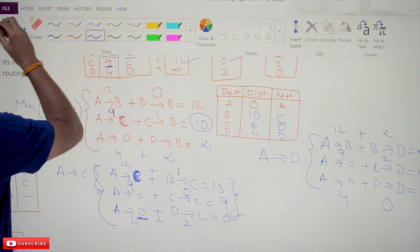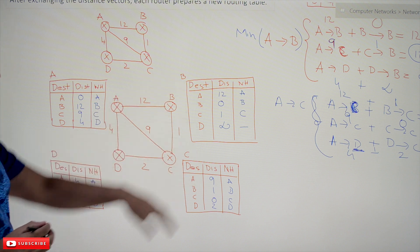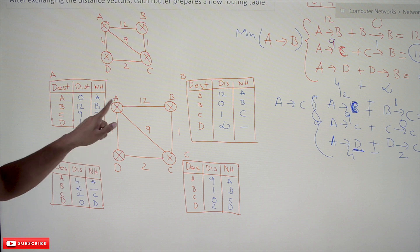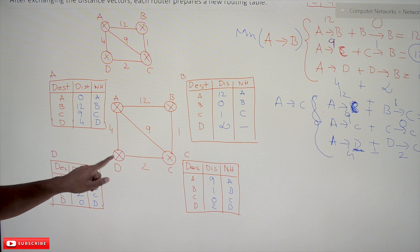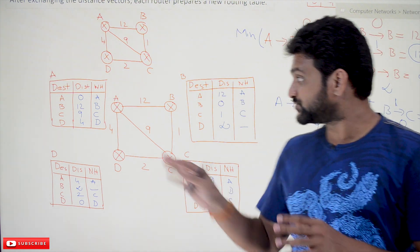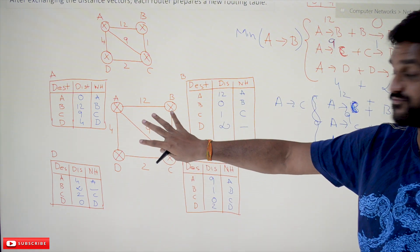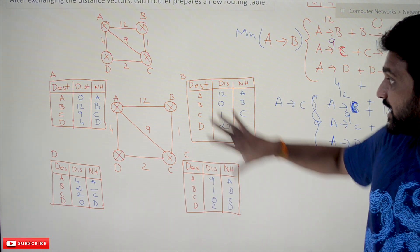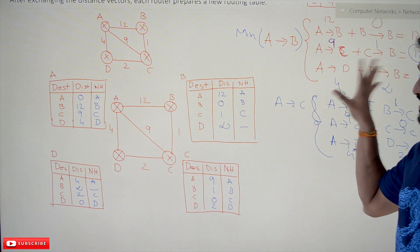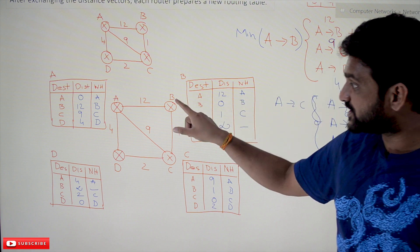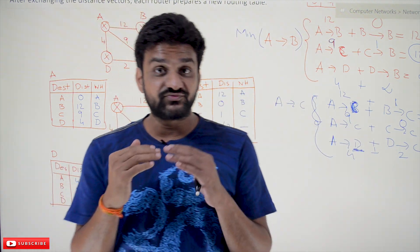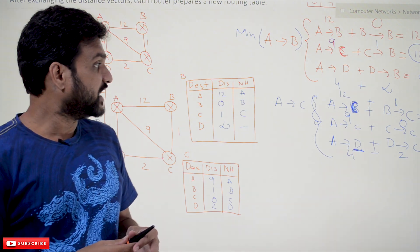This gives us the updated routing table at A. For practice, take this diagram from Step 1 and try to generate the updated routing tables at routers B, C, and D using the same steps. This is how routing tables get updated.